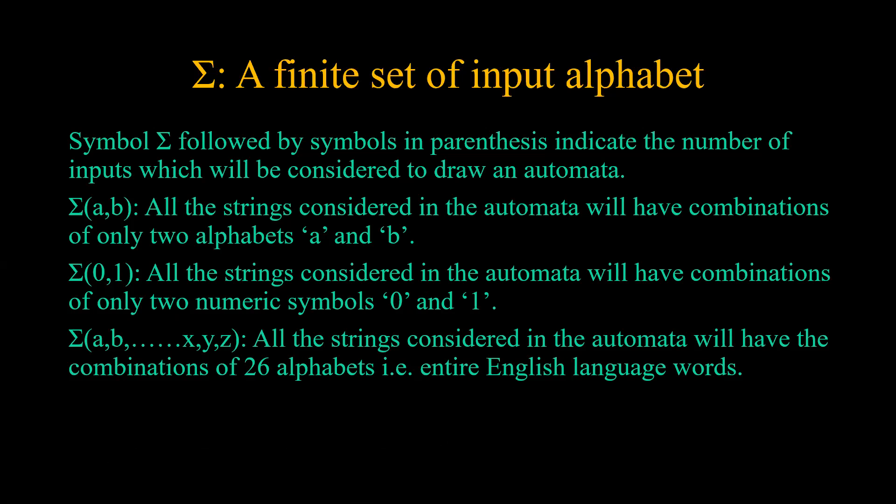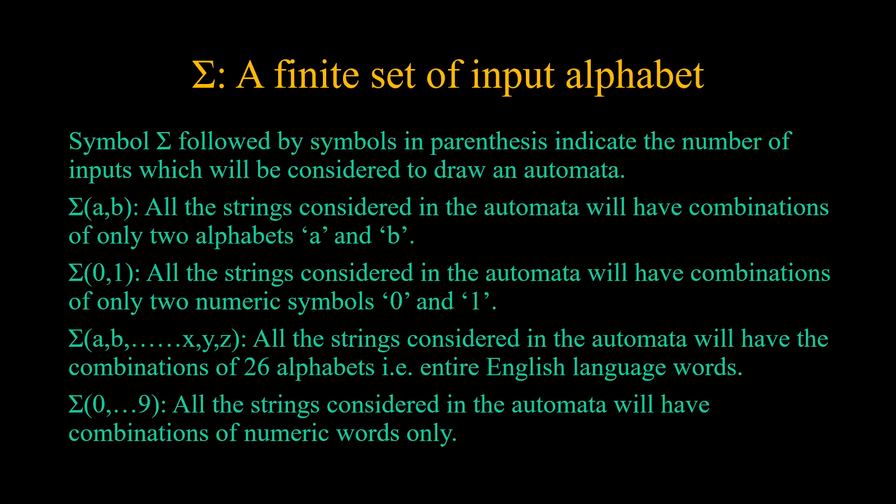If we talk about English language, sigma is A to Z. All strings considered will have a combination of 26 alphabets, and since every word of English language is a combination of one among these 26, we can say that sigma of A to Z represents the entire English language. If we have sigma of 0 to 9, that means all strings considered in the automata will be a combination of numerics only.